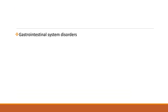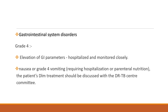Another adverse event of concern is gastrointestinal system disorder. If the patient has a grade 4 elevation of GI parameters, they should be hospitalized and monitored closely. If the patient is experiencing nausea or grade 4 vomiting, the patient's Delamanid treatment should be discussed with the DRTP center.